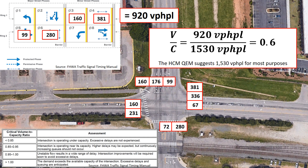One thing to note: there are railroad tracks that go through the southern leg of this intersection, and those do interrupt operations. So under those conditions, the intersection may not operate as this analysis suggests. But from a purely traffic volume perspective, using the quick estimation method, this intersection appears to operate sufficiently and under capacity.